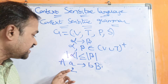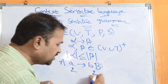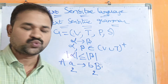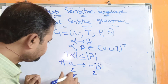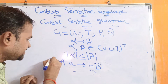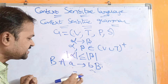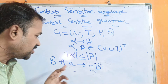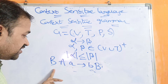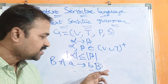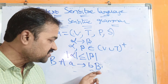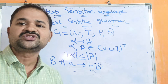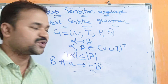Consider another production where the length of the left hand side is three and the length of the right hand side is two. So three is less than or equal to two is false. This production is not in CSG.